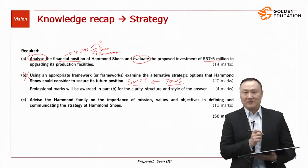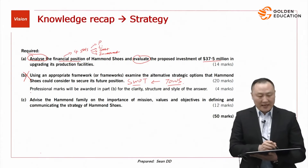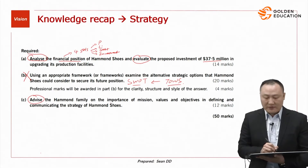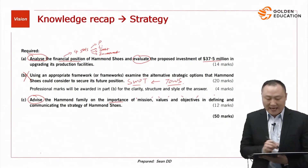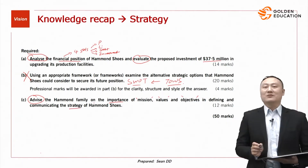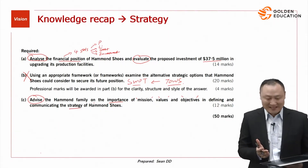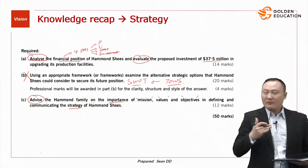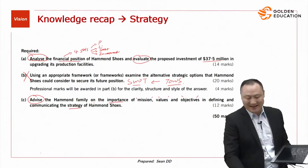Fundamental knowledge from model number three — strategy — is very important. And requirement C asks you to advise the Harman family on the importance of mission, value, and objectives in defining and communicating the strategies of Harman's Shoes. So this is a V2MGO question. Parts A and C are our areas of attention.